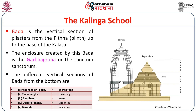The Bada is the vertical section from the Pitta — the plinth — up to the base of the Kalasha at the top of the Shikara. The first thing built is the Pota, the foundation, and the Pitta, the plinth visible on top. The different vertical sections of the Bada from the bottom are: Pabhaga (sacred foot), Talajanga (lower leg), Bandhani (the knee), Upparajanga (upper leg), and Barandi (waistline).